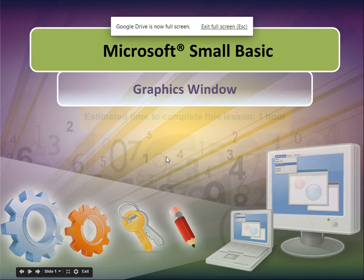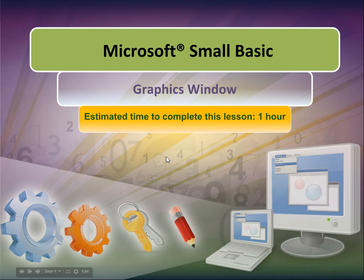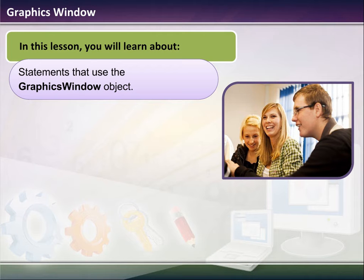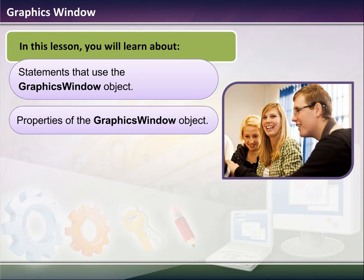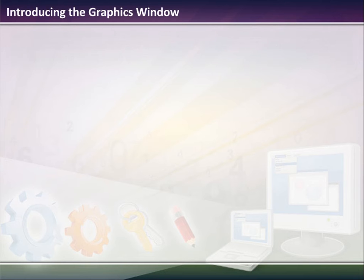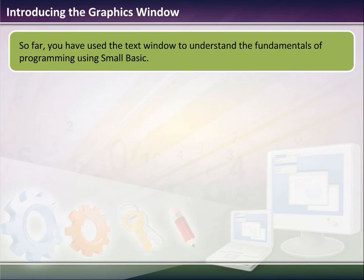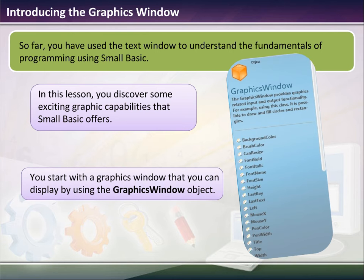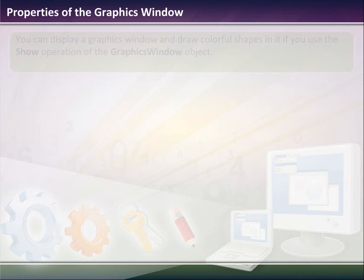Today we're going to talk about the graphics window. Up to this point we've been using the text window, but now we're going to use the graphics window. The graphics window is a lot like the text window except we can do graphical things. We'll talk about the statements used in the graphics window object, its properties, operations, and their corresponding objects.